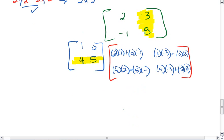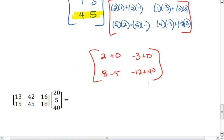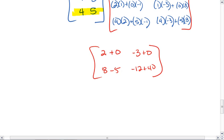We can now simplify. 2 times 1 is 2, plus 0 times negative 1 is 0. 1 times negative 3 is negative 3, plus 0. We get 8 minus 5, and negative 12, plus 40.